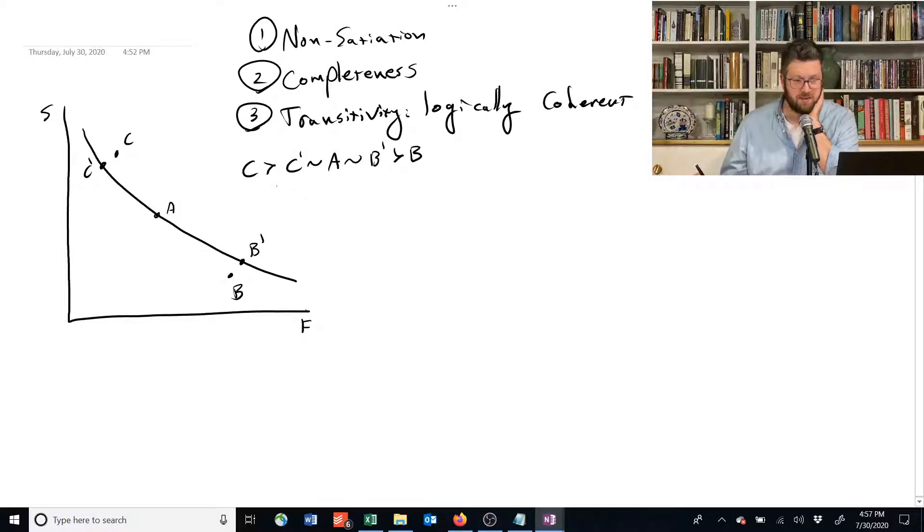And transitivity basically says that you can just carry through all these relationships like I've written. We could also say simply that C is greater than B. So transitivity implies that, well, let's use X, Y, and Z because we already have some A's over there.